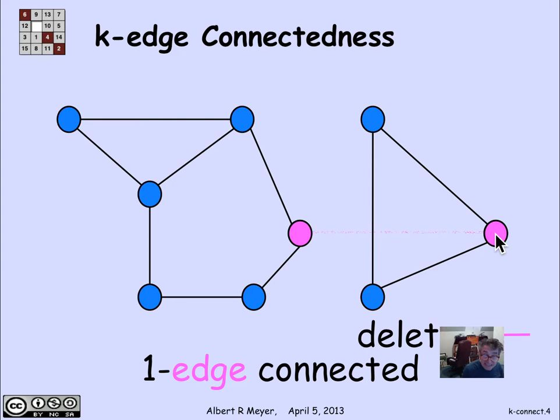In particular, if I delete that edge, then there no longer is a path between the two magenta vertices.